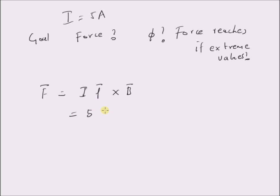Since the current is 5 amperes and L bar is z cap 2, cross product with r cap 0.2 cos phi.